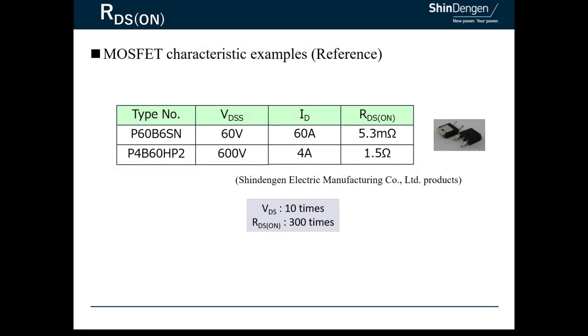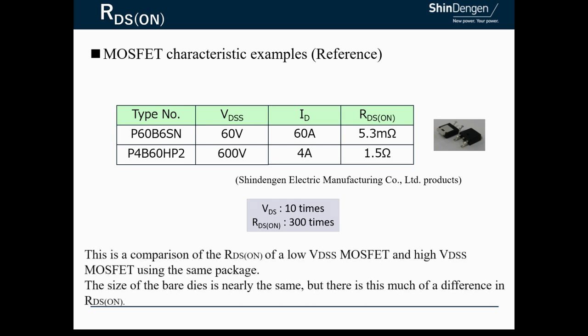This table shows a comparison of RDS(ON) for MOSFETs with 600 volt and 60 volt breakdown voltage. Both have the same package and the size of the built-in bare die is about the same. It shows that the difference in RDS(ON) can be as much as 300 times with the breakdown voltage being 10 times.